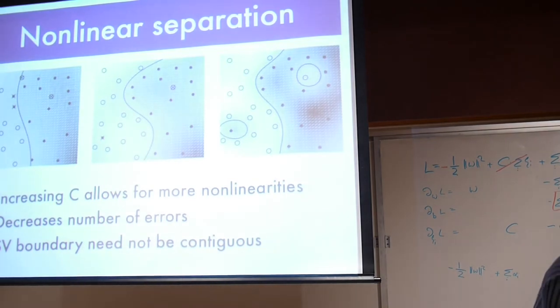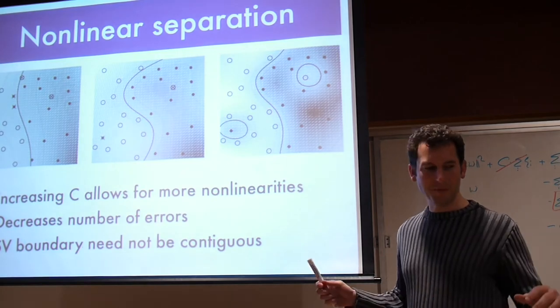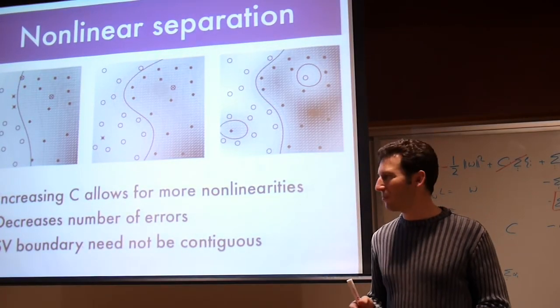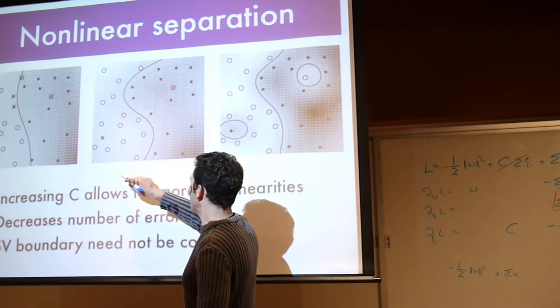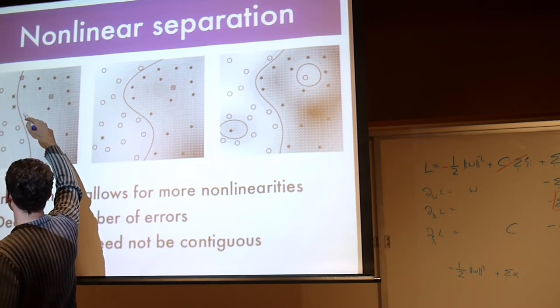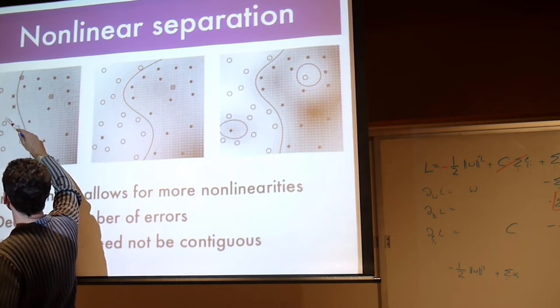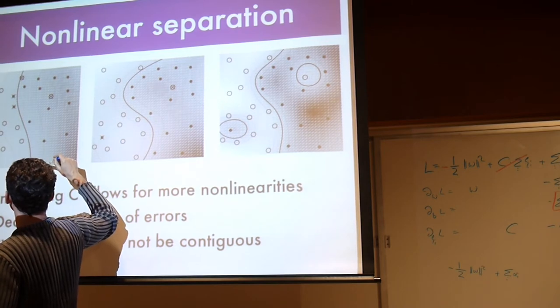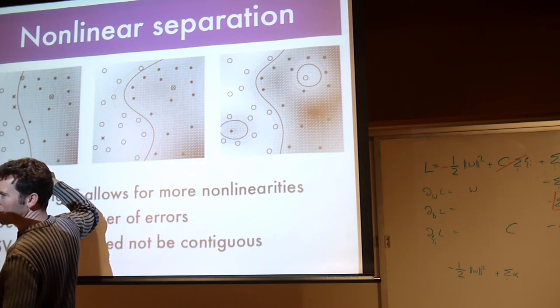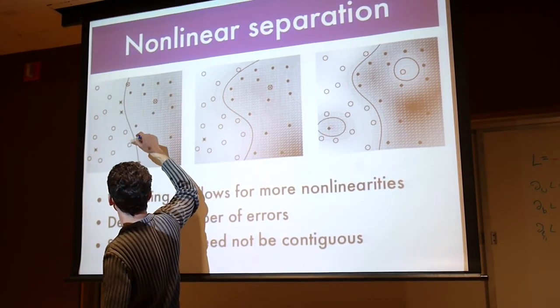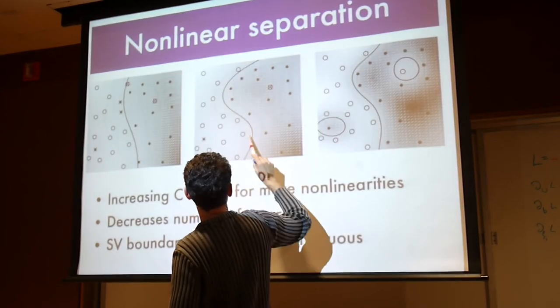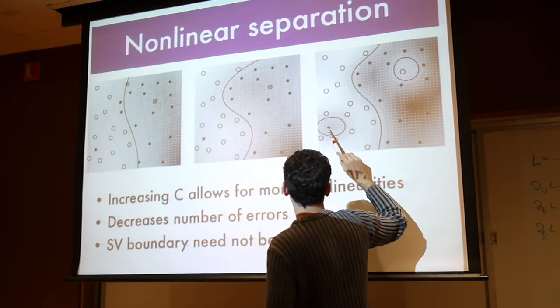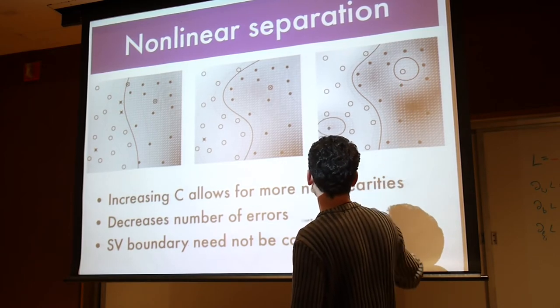The interplay between the regularization constant C and the function class: cranking up C (penalizing margin violations more) produces increasingly complex decision boundaries. With low C, many points fall within the margin on both sides. As C increases, classification improves but risks overfitting. Importantly, the decision boundary is linear in the high-dimensional kernel space, but need not be linear, continuous, or connected in the original low-dimensional space.